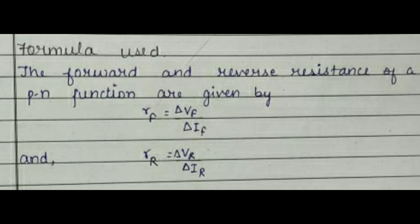This image shows the formula used for this practical. Here, Rf = ΔVf / ΔIf and Rr = ΔVr / ΔIr, where F stands for forward bias and R stands for reverse bias, V stands for voltage, I stands for current, ΔV is change in voltage, and ΔI is change in current.